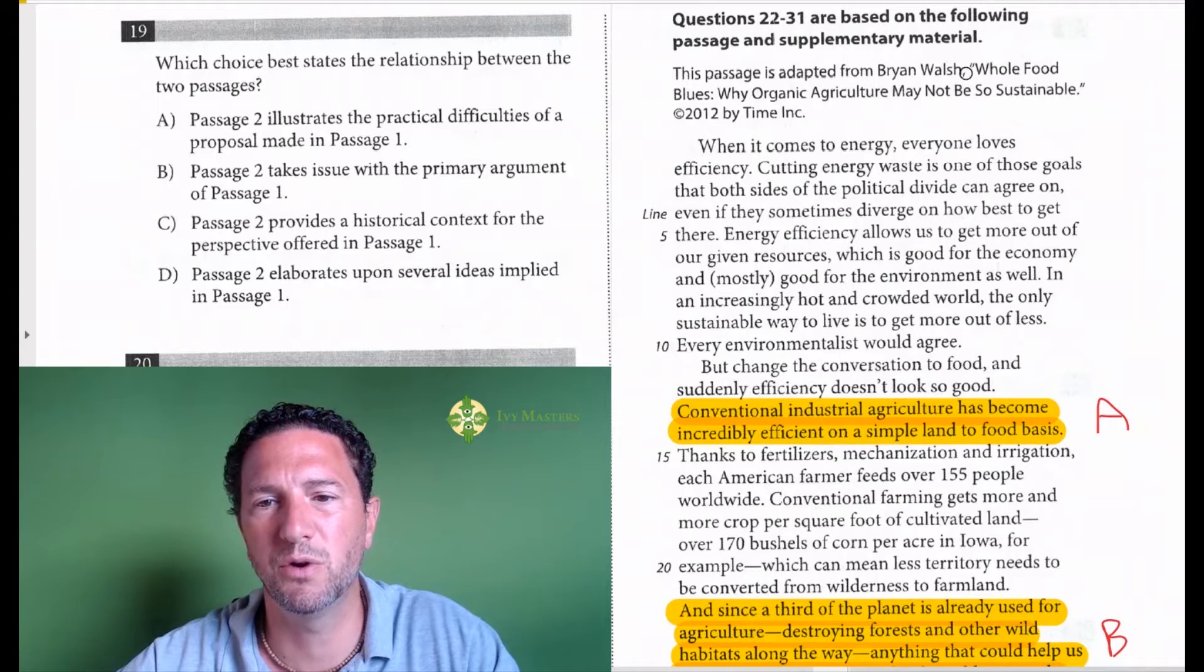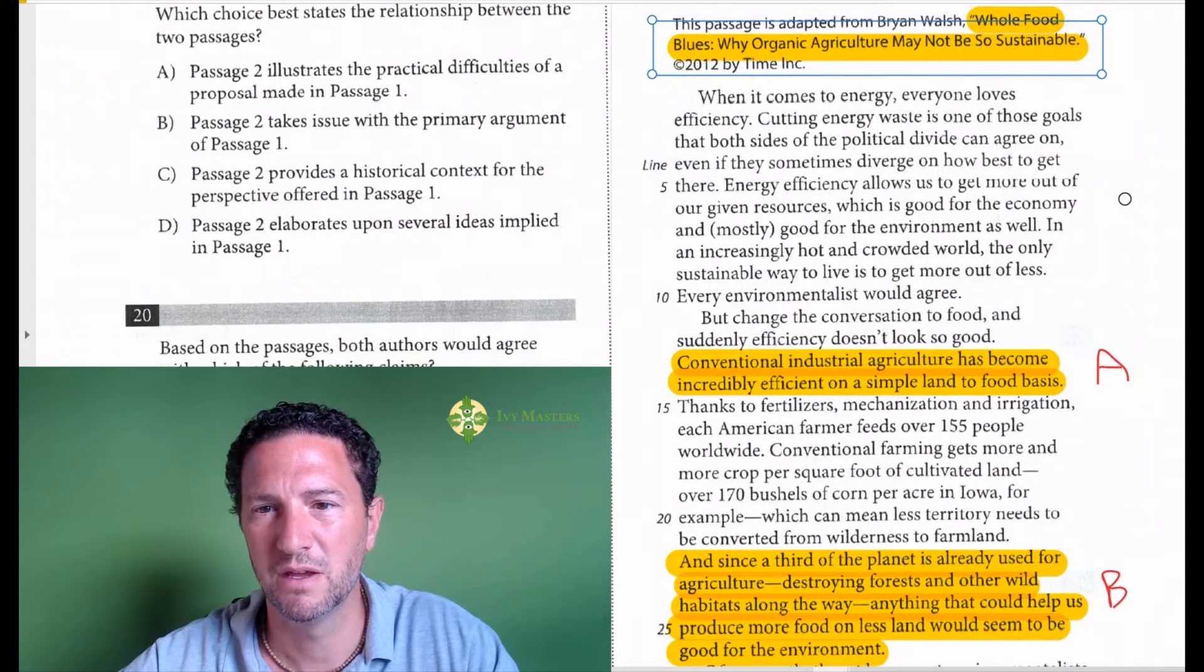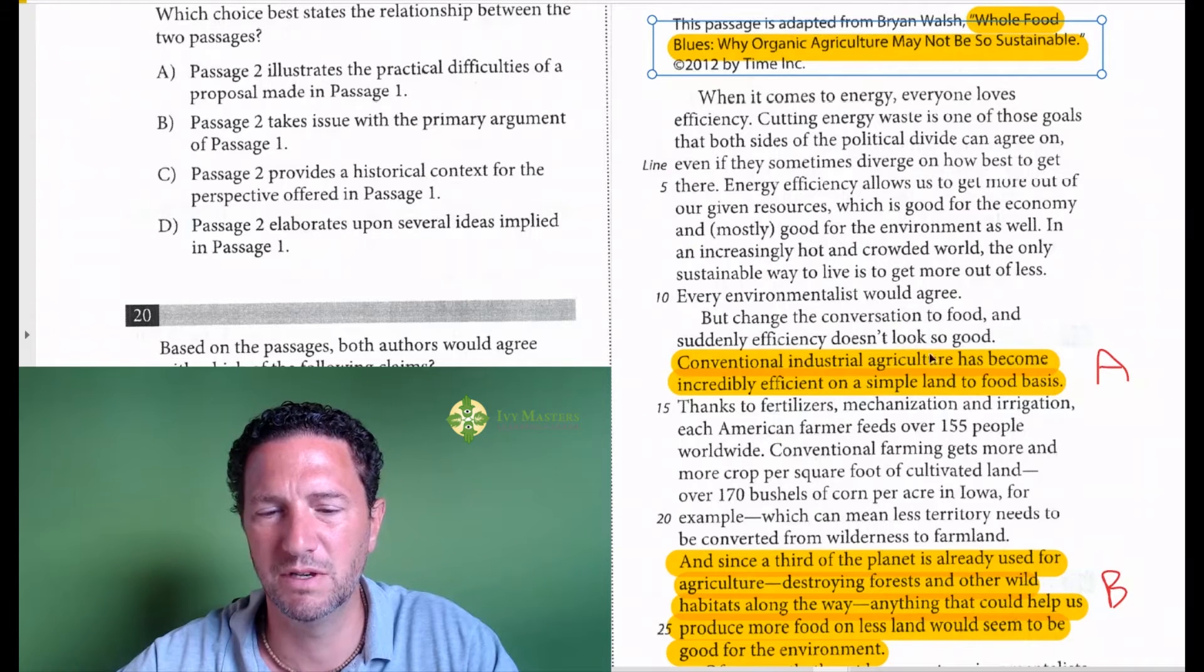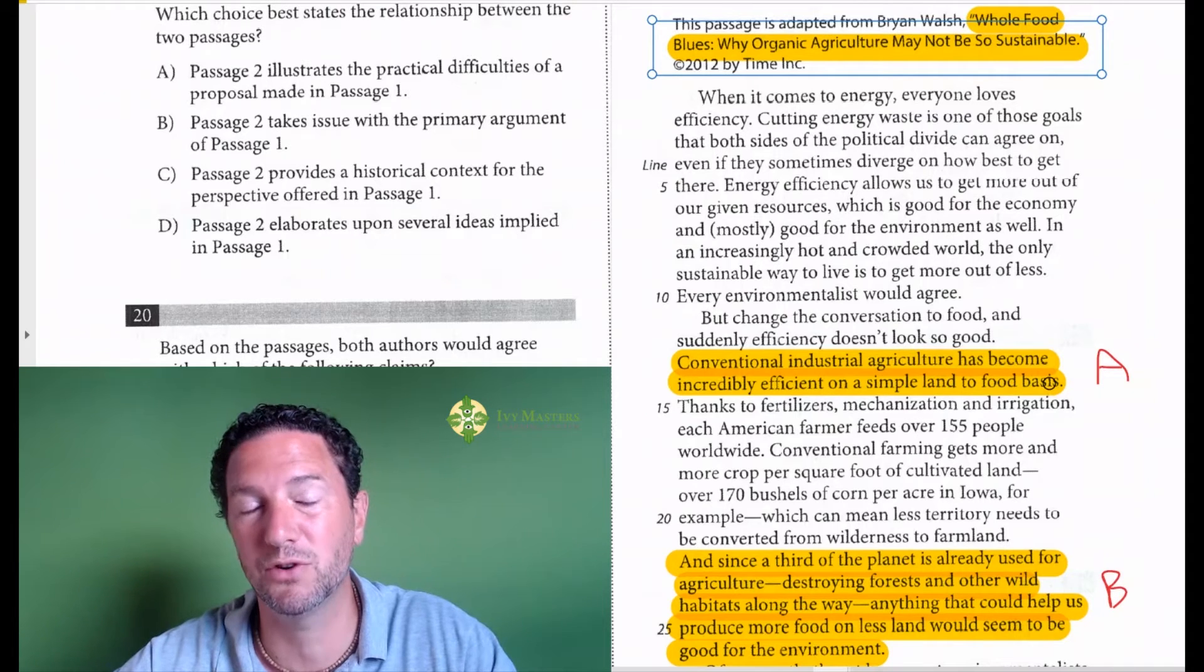First off, what we get is the title, Whole Food Blues, Why Organic Agriculture May Not Be So Sustainable. Let's talk about sustainability. Okay, what exactly does he mean by that? The answer is that conventional industrial agriculture has become incredibly efficient on a simple land to food basis. So what's meant by that, you might read before and after in order to find out.